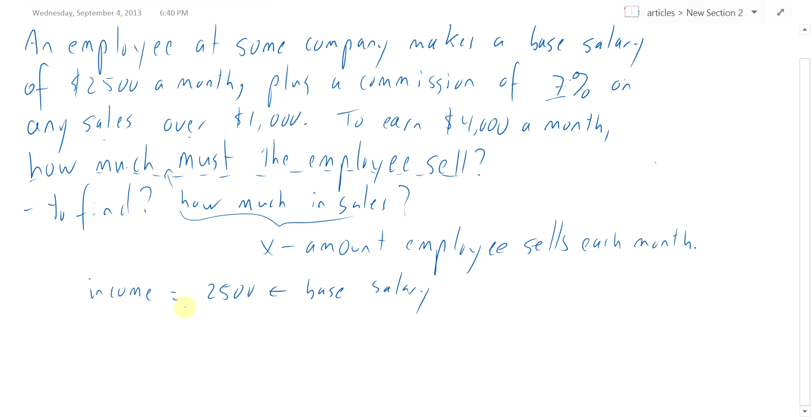Sales over $1,000 is what? Well, X is the amount of sales they make, and you're interested in how much over $1,000 did this person actually sell. So if they sold $2,000, if X was $2,000, then they would sell $1,000 over $1,000. So it's $2,000 minus $1,000. If they sold $11,000, that's $10,000 more than $1,000. So the amount of sales they make over $1,000 is X minus $1,000.